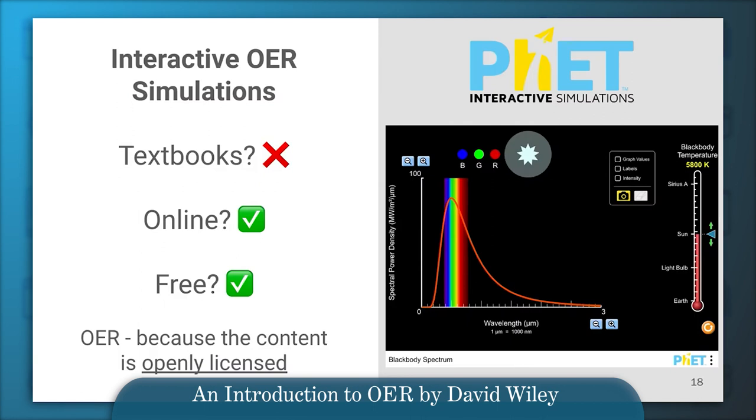A final example: interactive simulations — definitely not textbooks, they are online, and they are also free. We would still call them OER because their content is openly licensed. Open access content is a powerful tool for learning and innovation, but responsible use is crucial. By understanding the various ways to use it, respecting the restrictions, and appreciating its unique characteristics, you can unlock its full potential. Knowledge is meant to be shared, so let's embrace the open access movement and learn together.